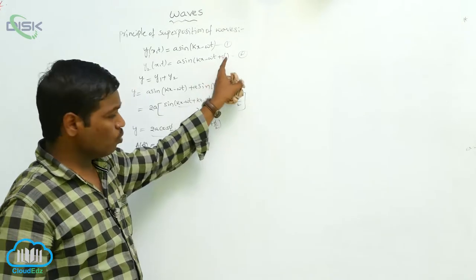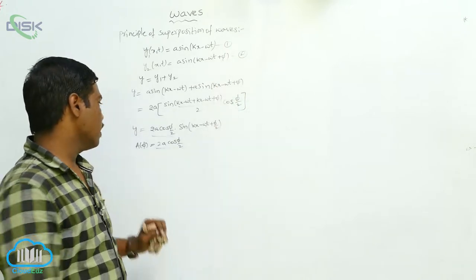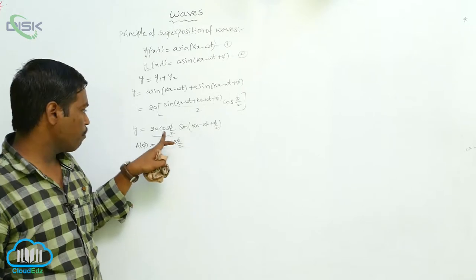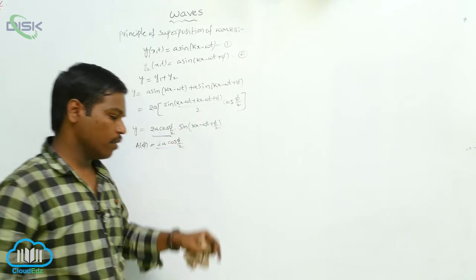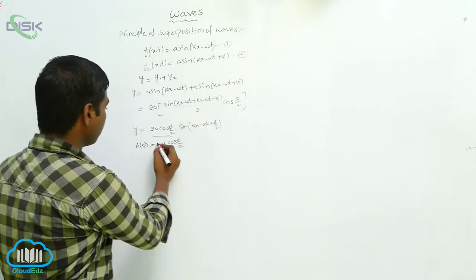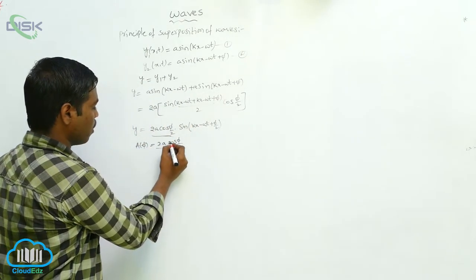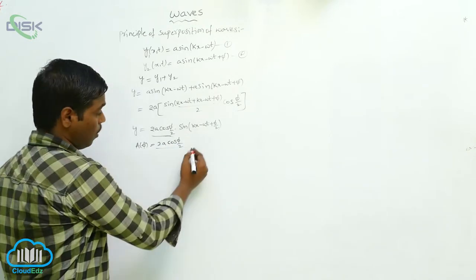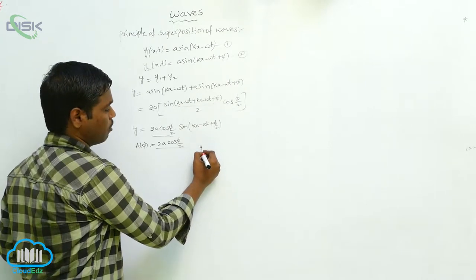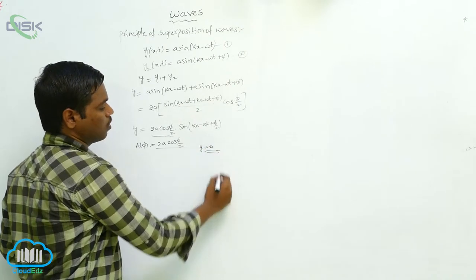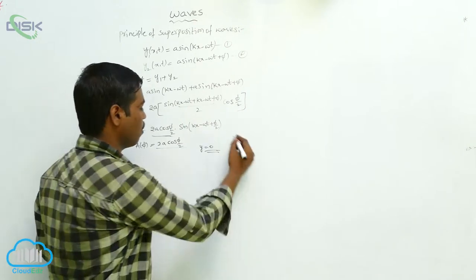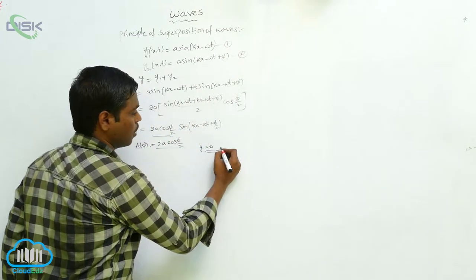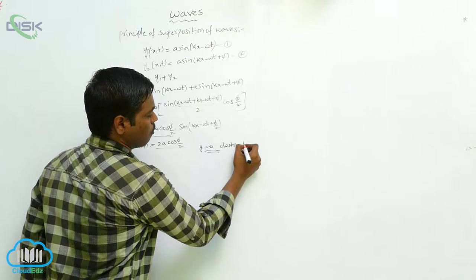When these two waves are traveling in the medium, the amplitude is changing from point to point. When the two waves travel in opposite directions and superimpose, the resultant displacement can become zero. When the resultant displacement is zero, this is called destructive interference.